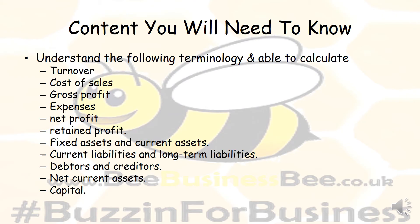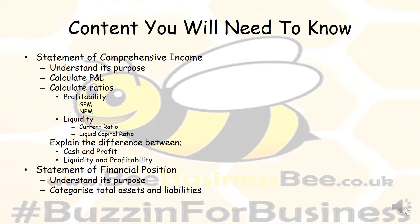There's quite a lot of complicated content to cover and understand. In addition, you need to understand what's meant by the statement of comprehensive income — its purpose — and be able to calculate profit and loss. You will also need to calculate ratios of profitability, which are the gross profit margin and net profit margin, as well as being able to calculate liquidity using the current ratio and the liquid capital ratio.